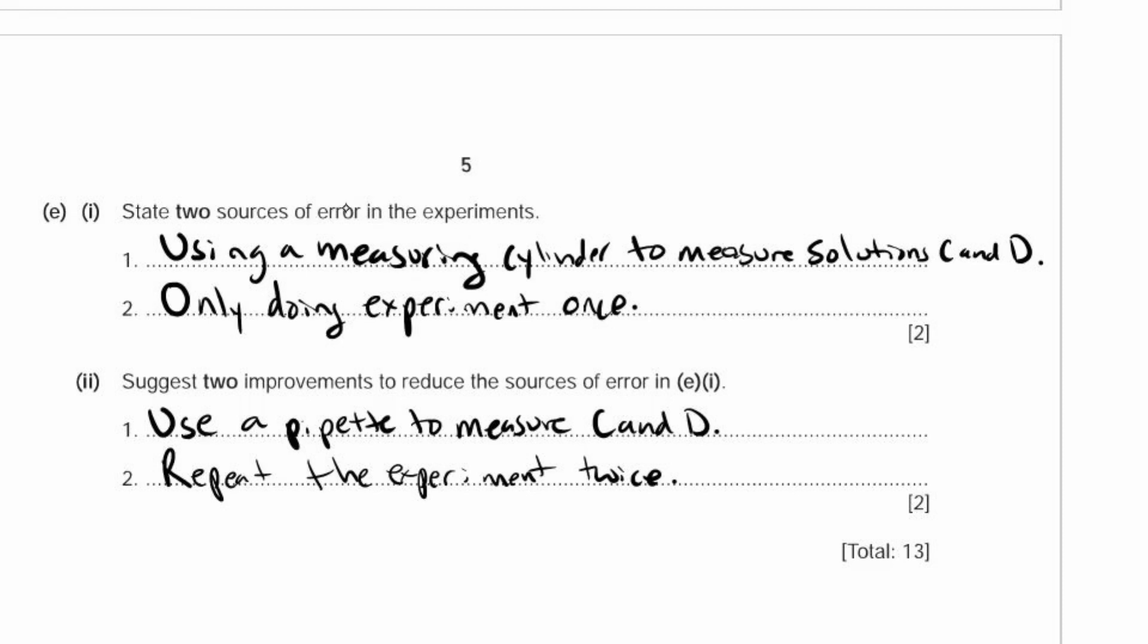Remember, a source of error is not human error. You cannot say you measured it wrong. Measure it better next time. That's just a mistake. That's why you repeat it. So do not put that down.